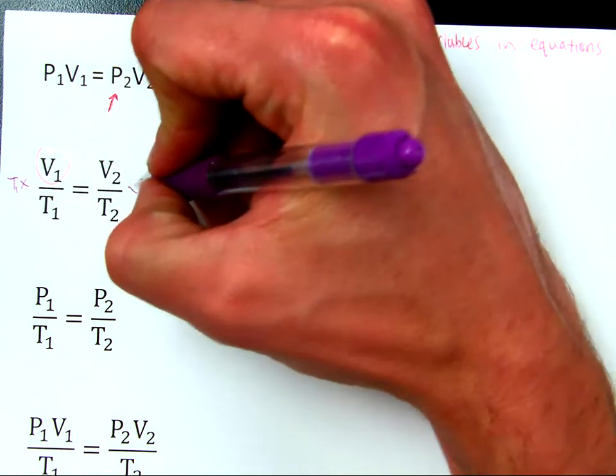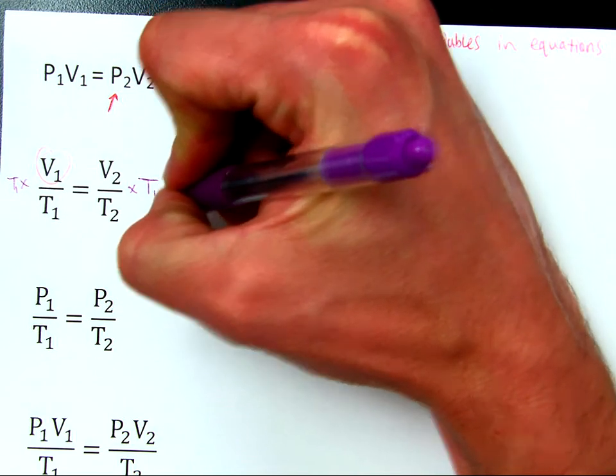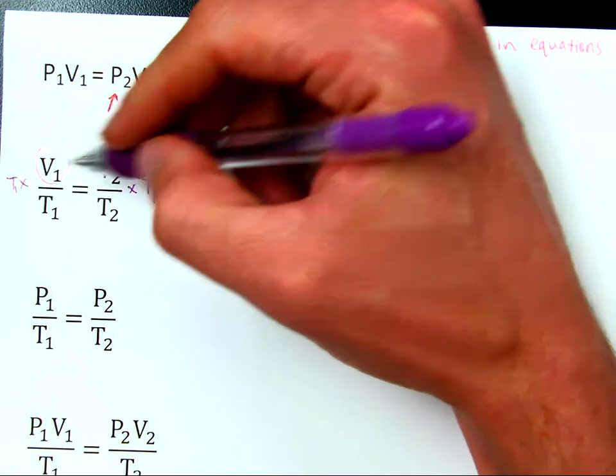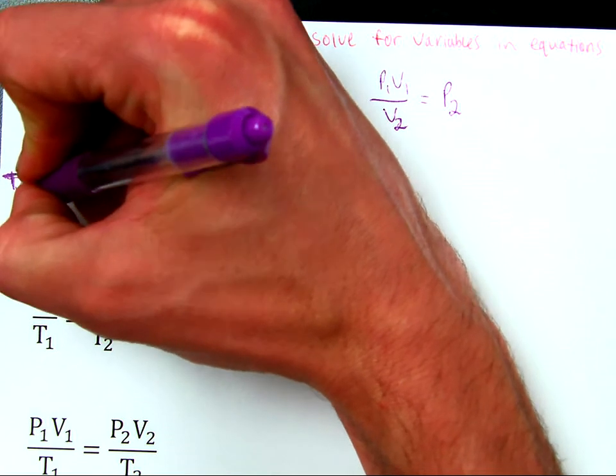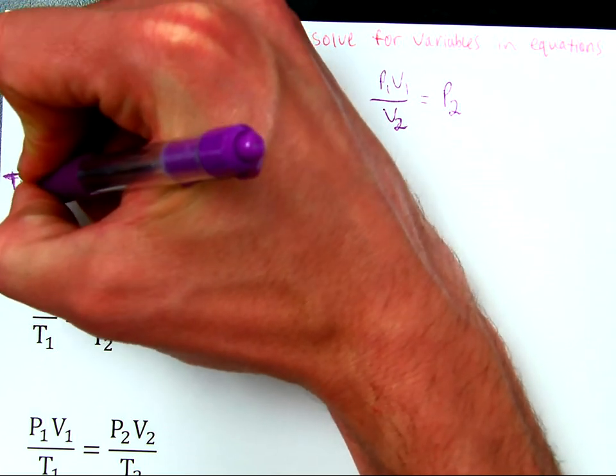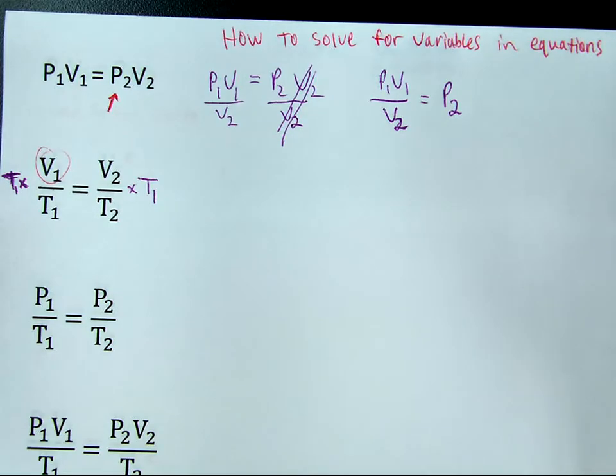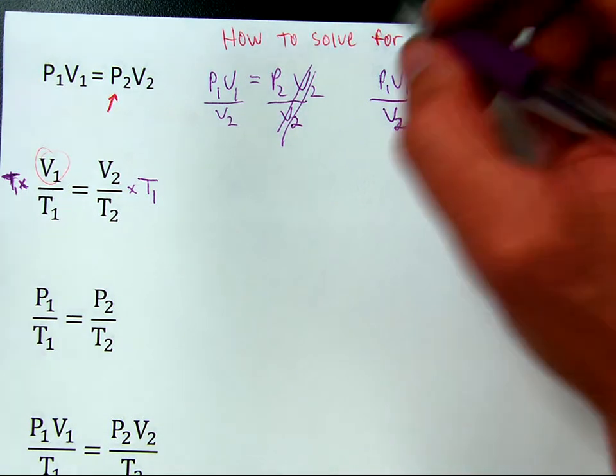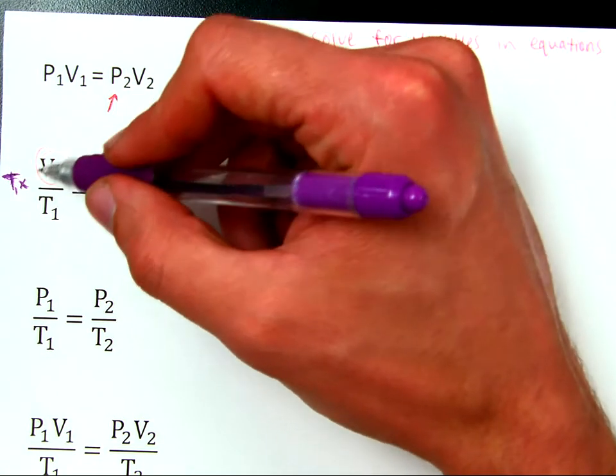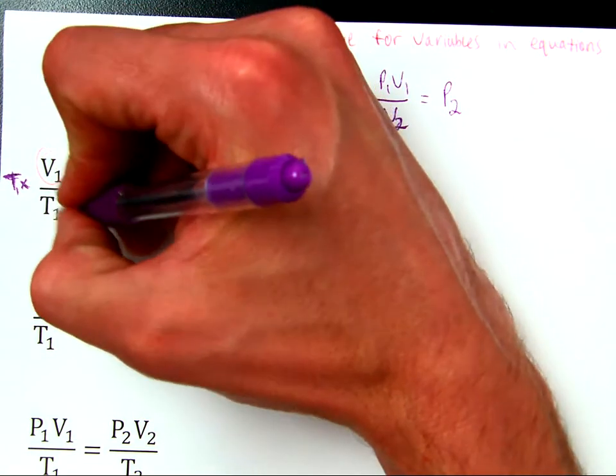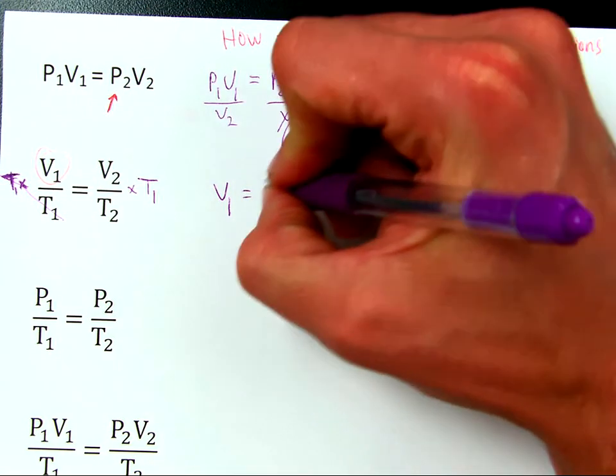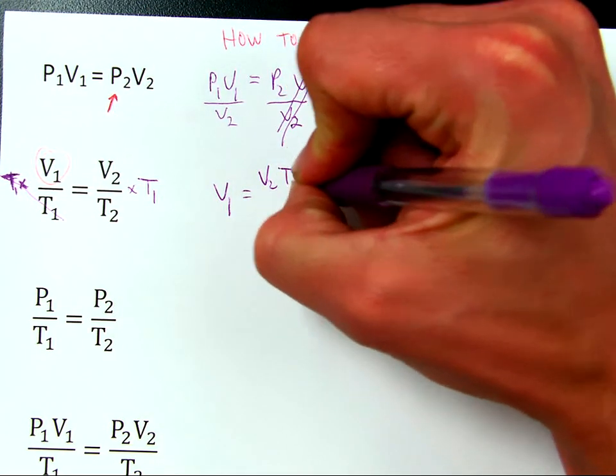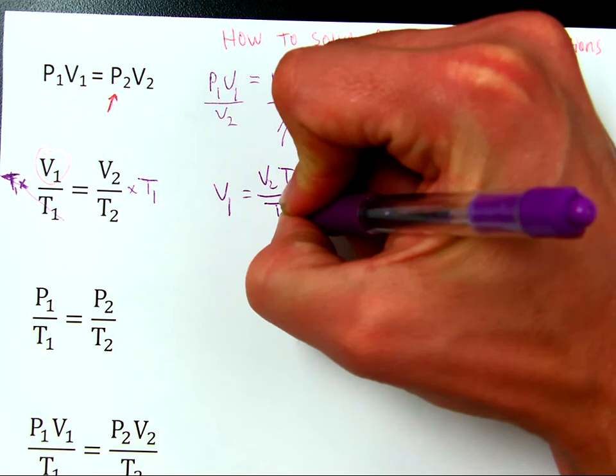But whatever I do to one side must be done to the other. So, both sides are multiplied by T1. This is a T1. And this is a multiplication sign, not an X. But at any rate, doing that, what I wind up with is T1 cancels T1 right there. So, V1 is all that's left on this side of the equal sign. So, V1 equals V2 T1 over T2.